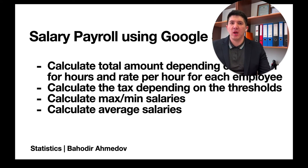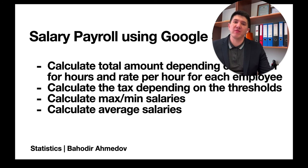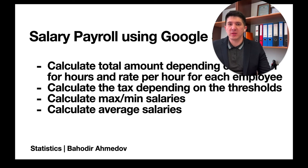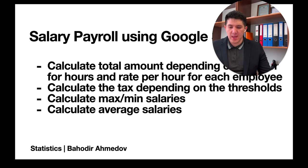If the total income is less than $450, the income tax is going to be rated at 25%. If it is more, it is going to be rated at 30%. We're going to learn how to make a formula so that it is calculated automatically, and also how to find the minimum values, maximum values, and calculate the average salaries.